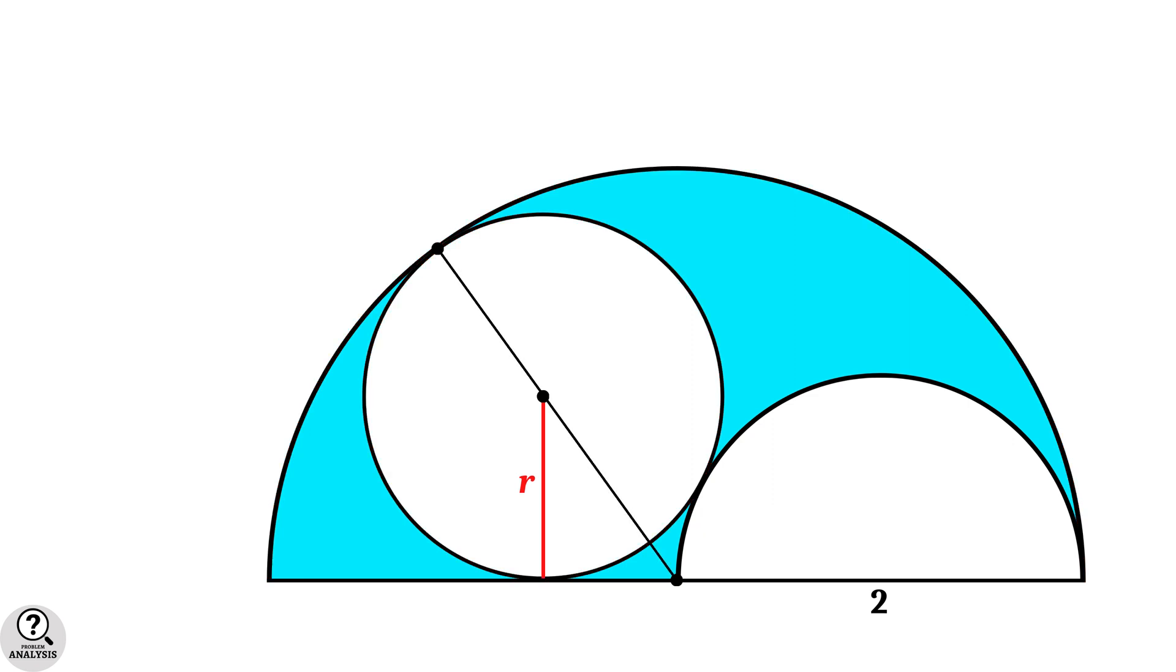Now it is given that the diameter of the larger semicircle is a tangent to the circle. And the radius is drawn from its touching point. Then by the second result we mentioned, those two are perpendicular to each other. So clearly a right triangle is formed here.